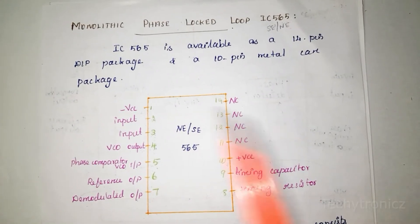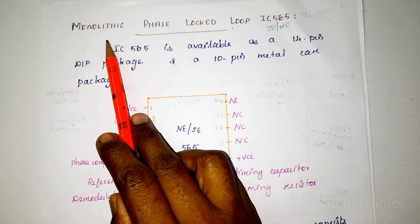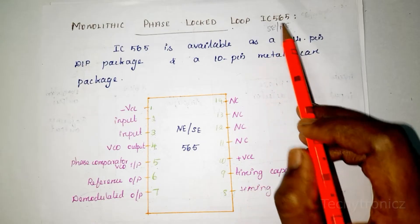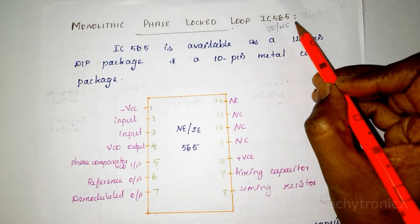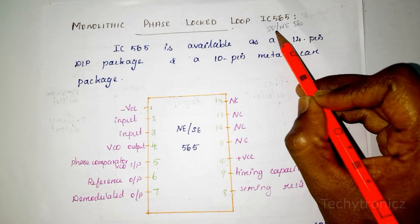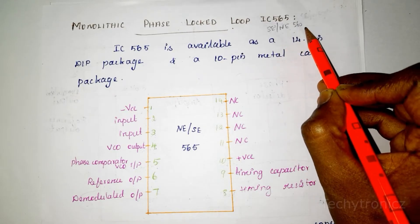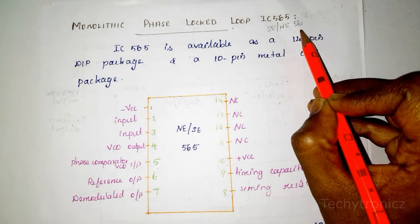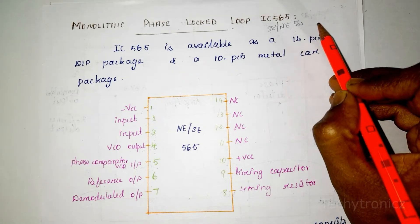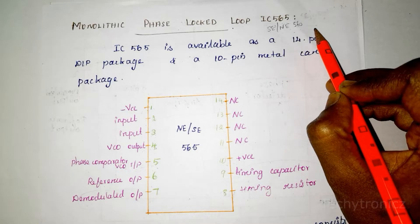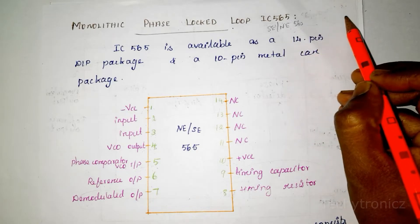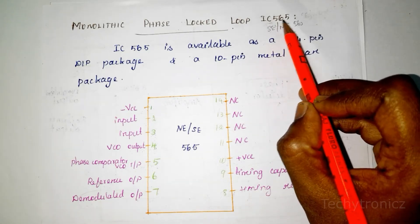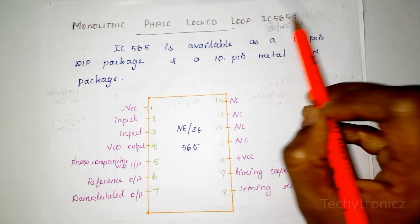Hi students. In this video we are going to learn about monolithic phase lock loop IC 565. The 560 series includes IC 560, 561, 562 up to 567. These ICs differ mainly in their operating frequency range, power supply requirements, and frequency and bandwidth adjustment ranges. The most commonly used IC is IC 565.